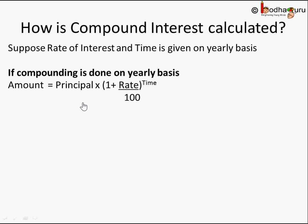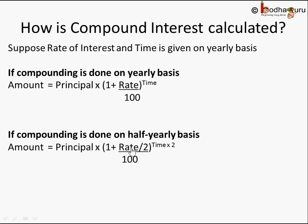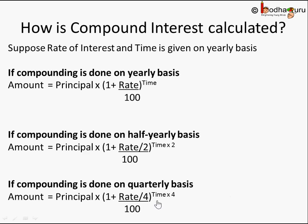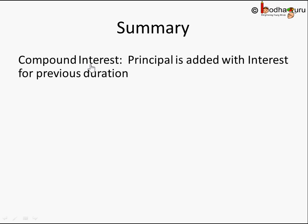In summary: for yearly compounding, use rate and time as given. For half-yearly compounding, divide the rate by 2 and multiply the time by 2. For quarterly compounding, divide rate by 4 and multiply time by 4, since a quarter is 3 months. The principal is added with interest after each compounding period — annually means every year, half-yearly every 6 months, quarterly every 3 months.